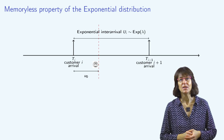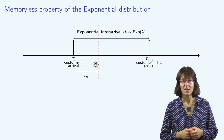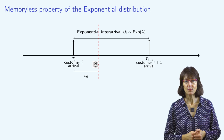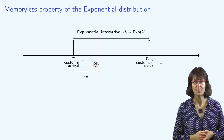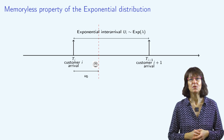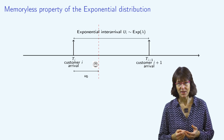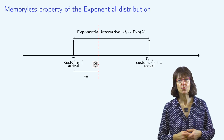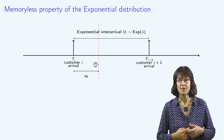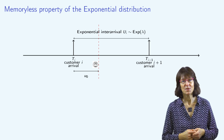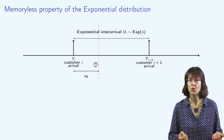One very important property of the exponential distribution is the so-called memoryless property. Consider an electric bulb with an exponential lifetime. Whether it has been used for one day or for one year, the time that remains until it will fail is distributed according to the same exponential distribution. This means that the past lifetime has no influence on the future lifetime of the bulb — it will not wear out.